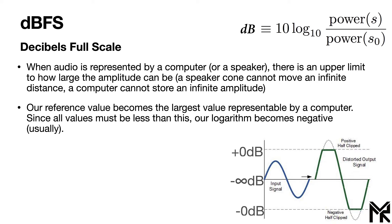Everything is represented as dBFS, and anything that tries to go above it gets clipped to zero dB. This is where it gets interesting — you have plus and minus zero dB, which refers to whether you're talking about a positive or negative amplitude. Taking the log of a negative number doesn't really work, which is why we define it as 10 times the log base 10 of the power of the two signals.